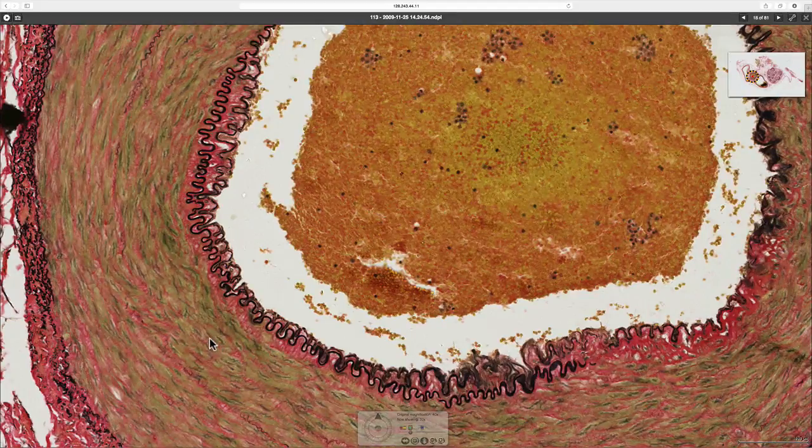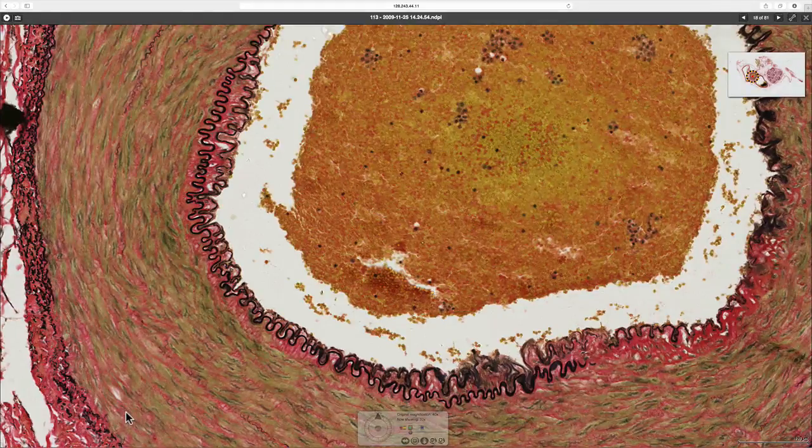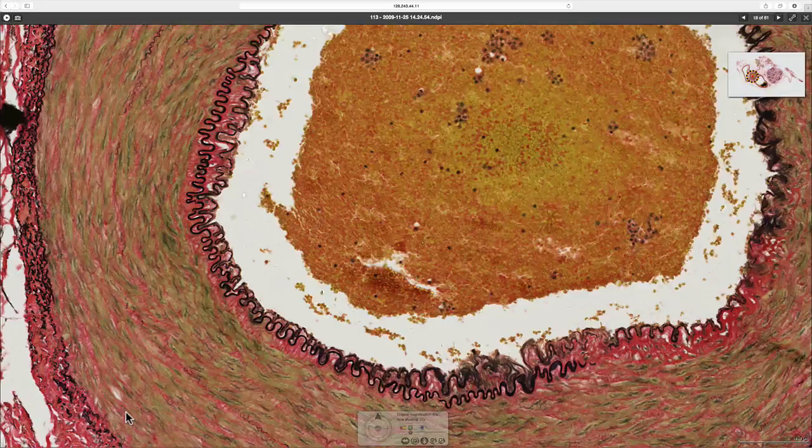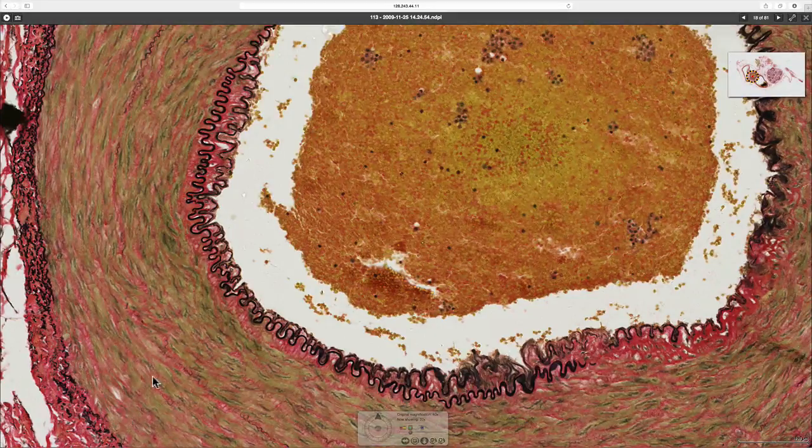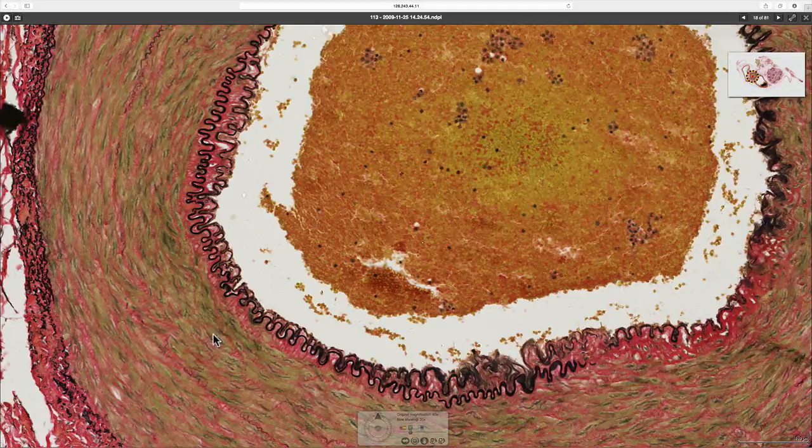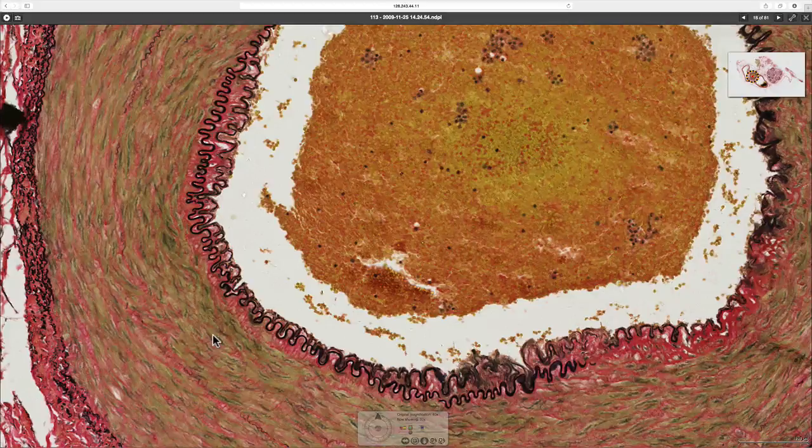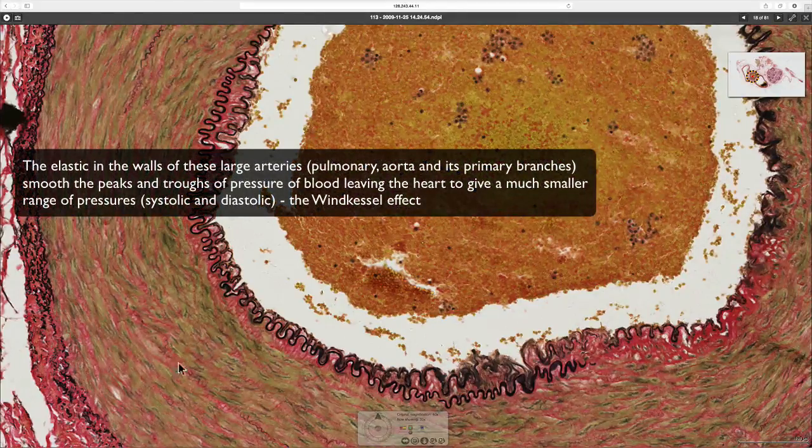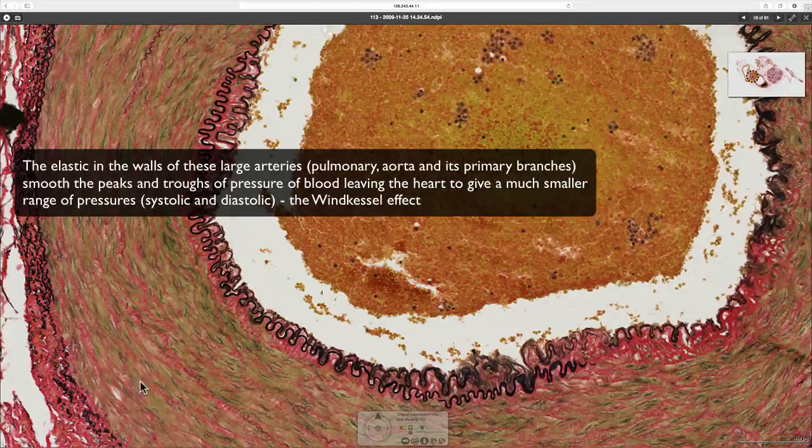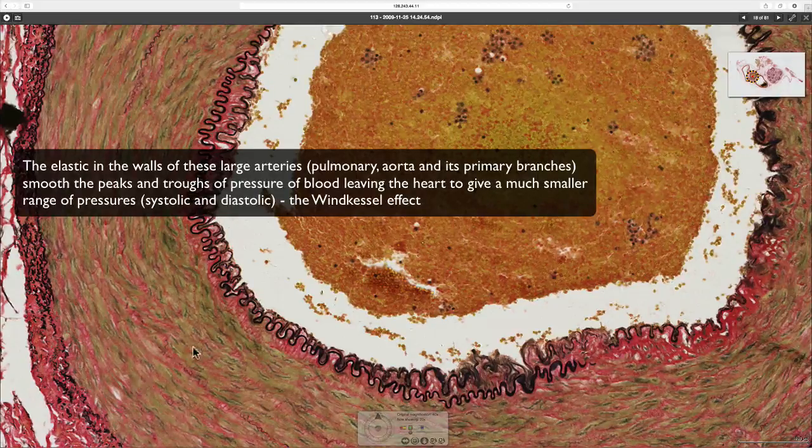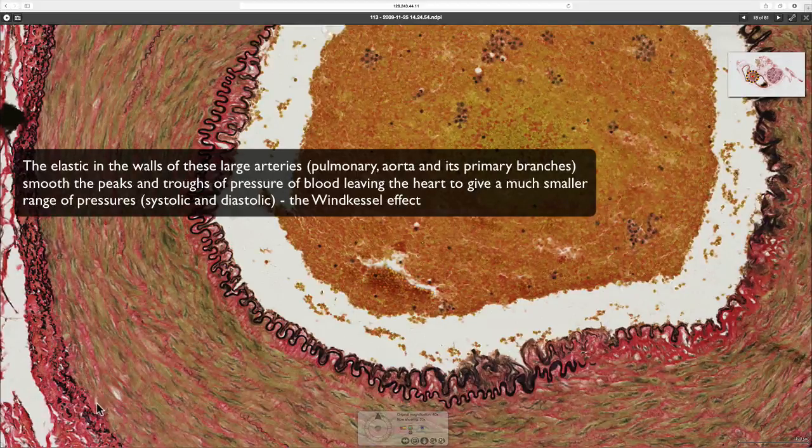Elastin fibers are prominent in arteries that are near to the heart - the aorta and some of the bigger branches of the aorta. That's to help in countering the force of the blood coming from the heart, so that the artery doesn't balloon out, but the force of the blood coming from the heart is directed down the tubes rather than causing a bulge in the artery wall.